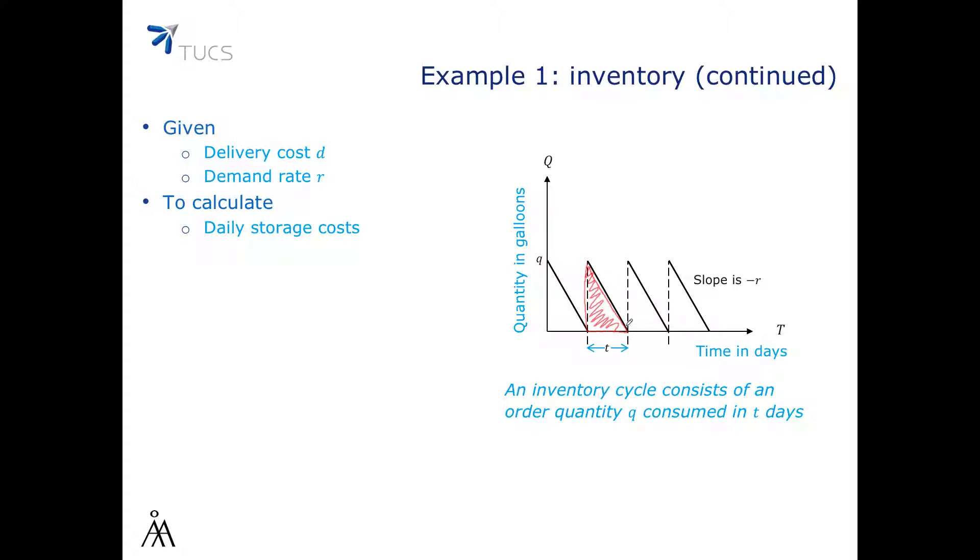So this means that we will have over this period of time gasoline to store. The gasoline to store is the area of this triangle and that's going to be Q times T over 2.